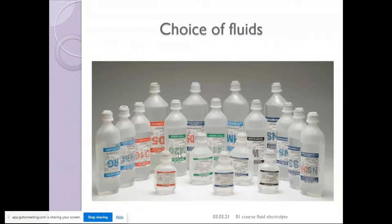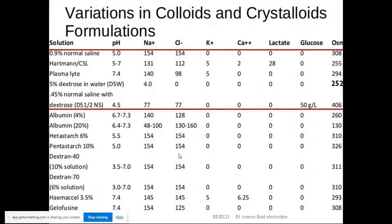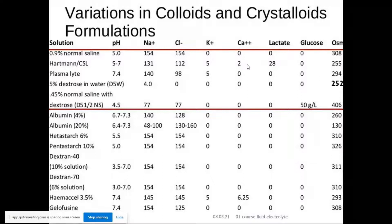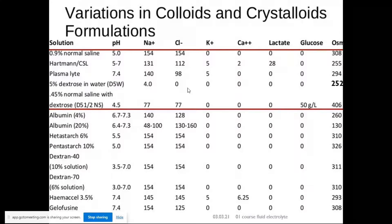What choice of fluids do you have? There is a wide choice, but we should have some rationale. 0.9% normal saline is hardly 'normal' — it has huge amounts of sodium but even more problematic is its high chloride content and nothing else. Hartmann's fluid or Ringer's lactate has lesser chloride, some potassium and calcium. Plasma-Lyte is now considered the 'balanced' fluid with the least chloride and is the most favored among intensivists globally.